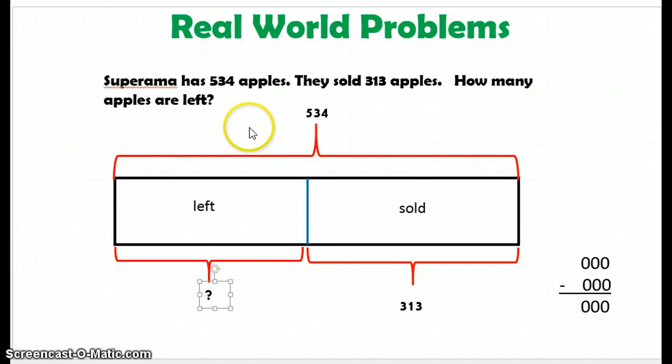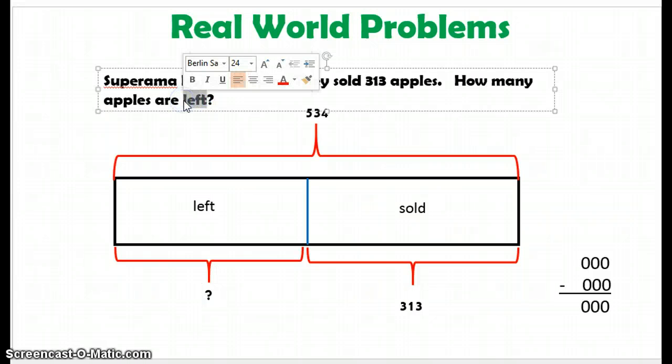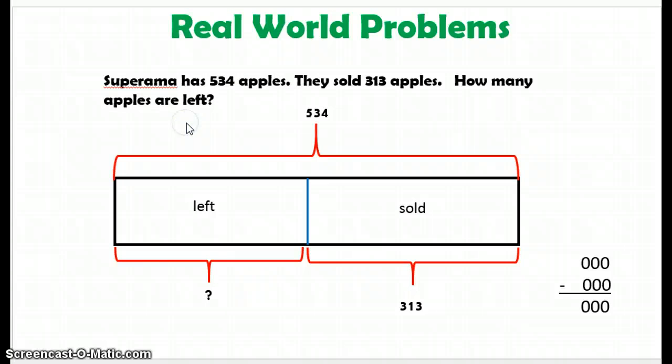So if I look at my bar model, and I look at the clues from my story, I have to subtract. When I have a whole, and I have a part that's missing, that means I have to subtract, okay? Remember that.